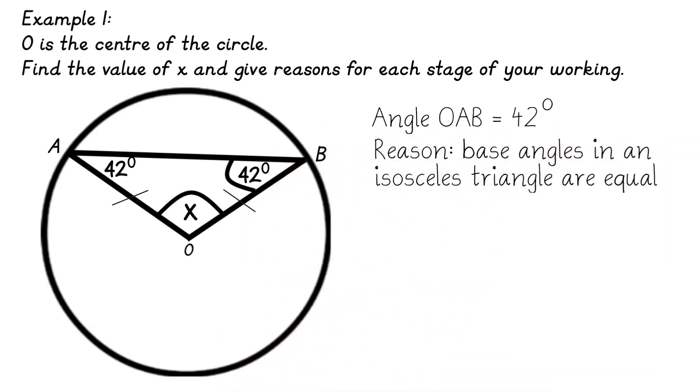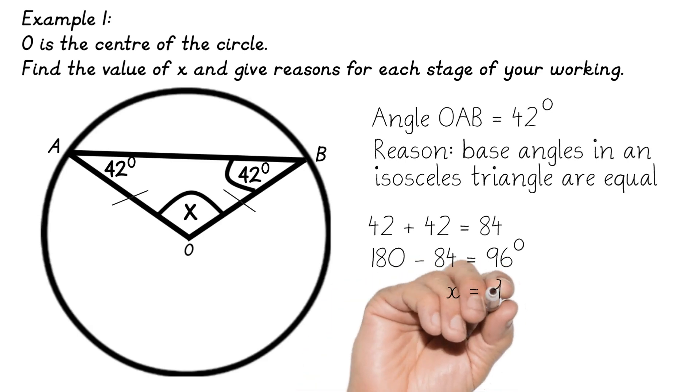Now one other property of a triangle you need to remember is that angles add up to 180 degrees. So if I add 42 and 42 together I get 84 and then take it away from 180 to get 96. So x is 96 but again I want to give reasons for each stage. So the reason I did that is because angles in a triangle add up to 180 degrees.